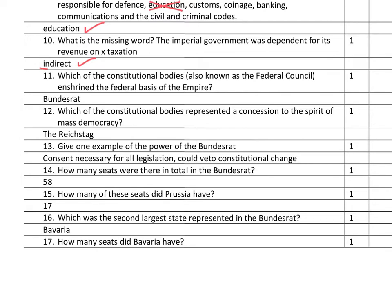Question eleven: the constitutional body also known as the Federal Council — worthwhile remembering that one — that enshrined the federal basis of the empire, the involvement of the leaders of the 25 states in imperial government, was the Bundesrat, the upper house, that sat alongside the Reichstag. And the Reichstag is the answer to question twelve. The Reichstag represented a concession to the spirit of mass democracy — in other words, allowing the masses to have some involvement in lawmaking.